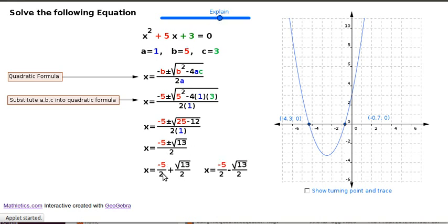And that means you've got minus 5 on 2 plus the square root of 13 on 2, and minus 5 on 2 minus the square root of 13 on 2. So you'll notice that this minus 5 on 2 is halfway in between these two x values.